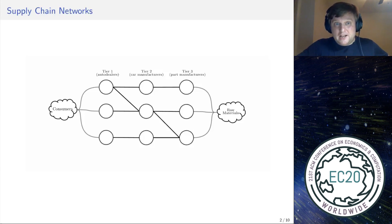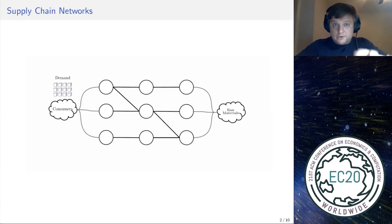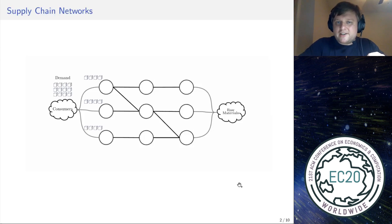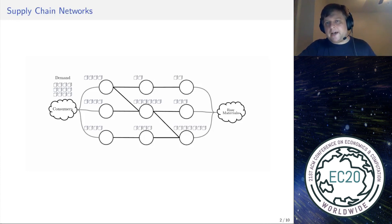Besides the structure, there is some behavior embedded in the chain. Assume there is a certain potential buying potential at the consumer side — consumers may buy up to a certain amount of product, which we call demand. For simplicity, all downstream retailers have equal exposure to the consumer market, so this demand is equally distributed among retailers. Retailers then distribute this demand based on which mid-tier suppliers they source product from. For example, the second retailer sources all four units from the second upstream supplier, and the first retailer can split its demand over two upstream suppliers. This way demand propagates upstream through the supply chain and reaches the raw material market, where production can start.